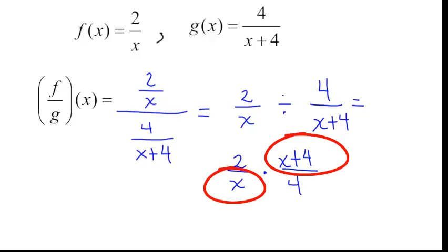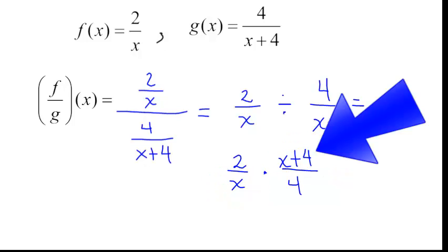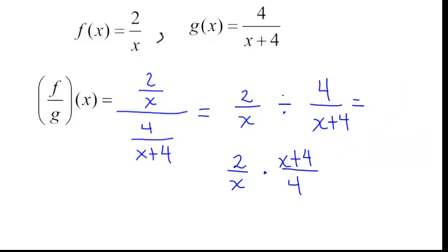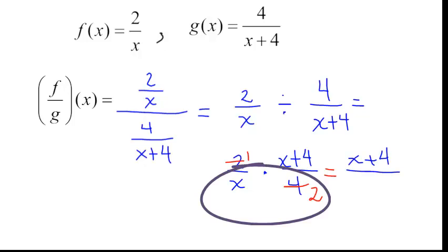Then I see if I can cancel anything. Will this x and this x cancel? No. This is not x. This is x plus 4. It goes together. It will only cancel with another x plus 4. But this is 2, this is 4. 2 will go into both of those: 2 goes into 2 one time and into 4 two times. Now multiply straight across. In the numerator, 1 times (x+4) is simply x plus 4. In the denominator, x times 2 is 2x. The answer is (x+4) over 2x.